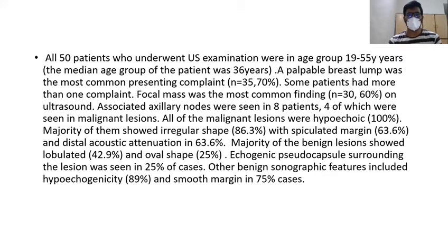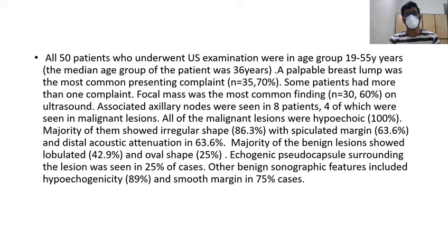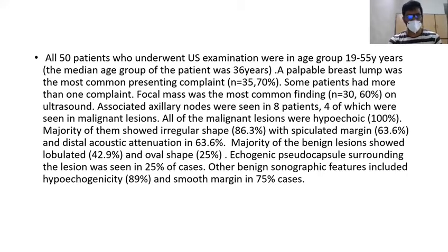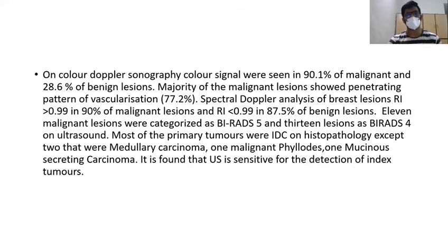Four of the axillary lymph nodes were seen in malignant lesions. All of the malignant lesions were hypoechoic. Majority of them showed irregular shape with spiculated margins and distal acoustic attenuation at 63.6%. Majority of the benign lesions showed lobulated and oval shape. Echogenic pseudocapsule surrounding the lesion was seen in 25% of cases.